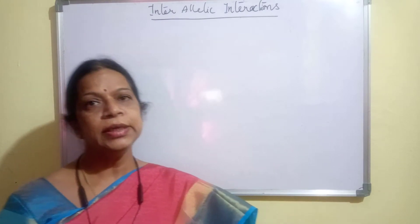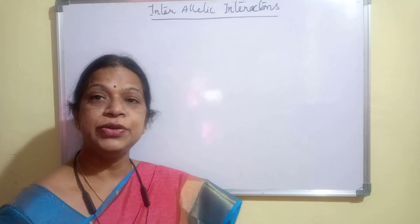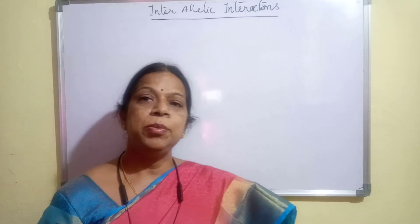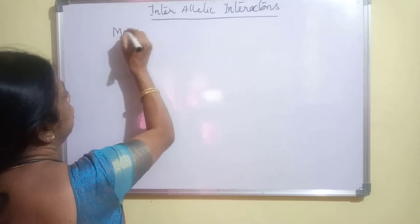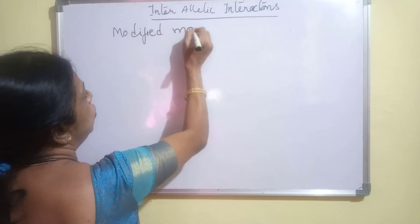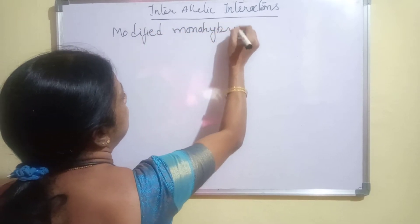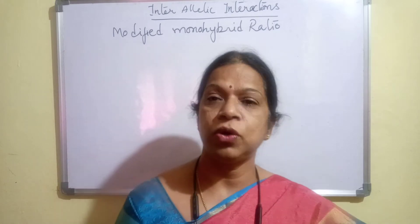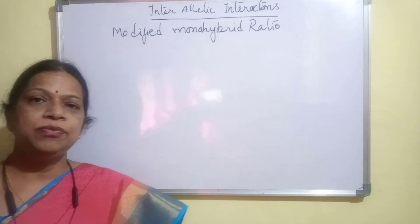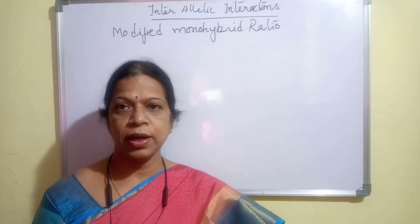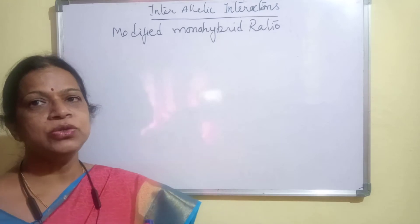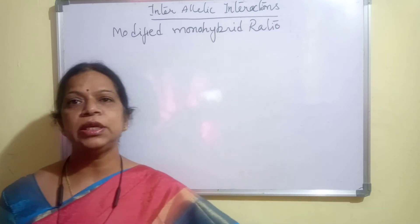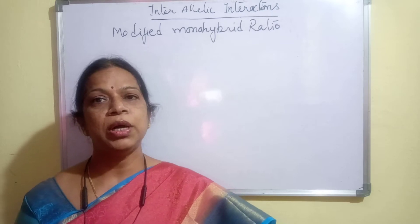Now we are going to look at inter-allylic interaction. In inter-allylic interaction, the first part we will do is the modified ratios — modified monohybrid ratio. We all know in Mendel's monohybrid cross, the phenotypic ratio is 3:1 and the genotypic ratio is 1:2:1. These are the normal ratios, but in some conditions these ratios are modified — they are called modified ratios.